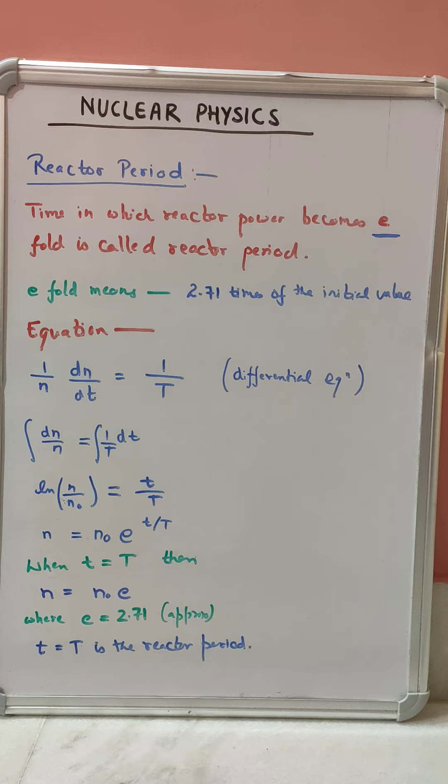So when we substitute small t equal to capital T, we will get n equal to n0 times e. So we can clearly see that the final power n becomes e-fold of the initial value of the reactor power, that is n0.